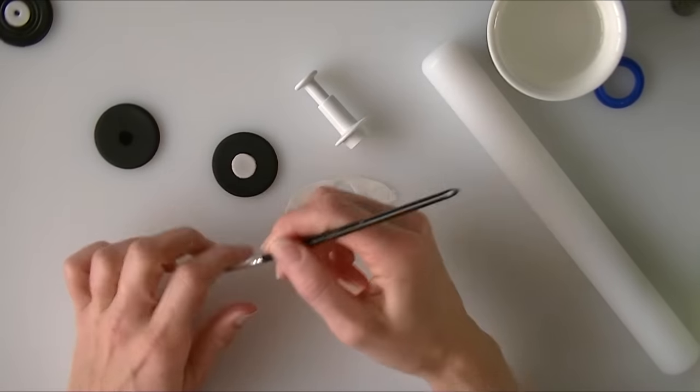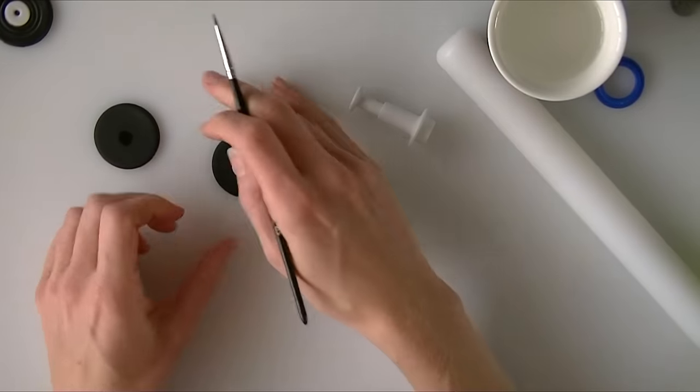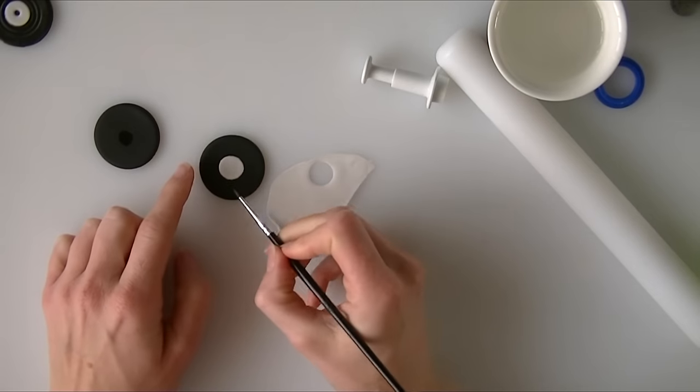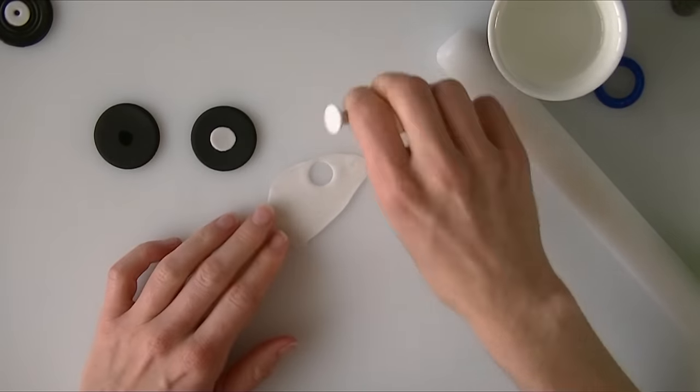So what I am going to do now is just gently brush away the little jaggedy edges as this cutter is not very sharp so it sometimes does leave a not very sharp edge on your shape. So I am going to do that for the other one.